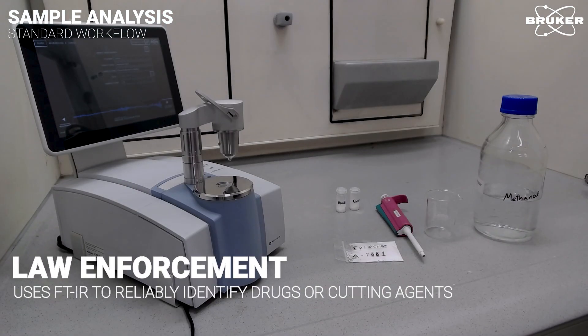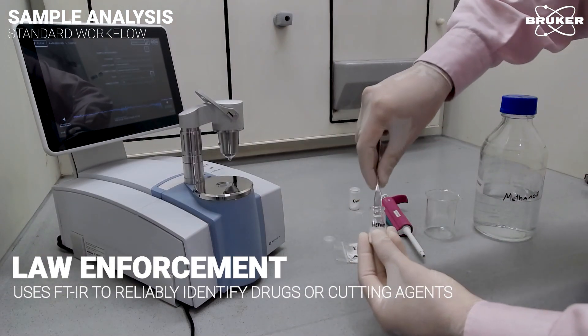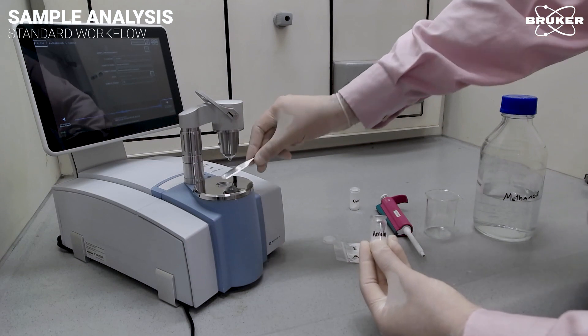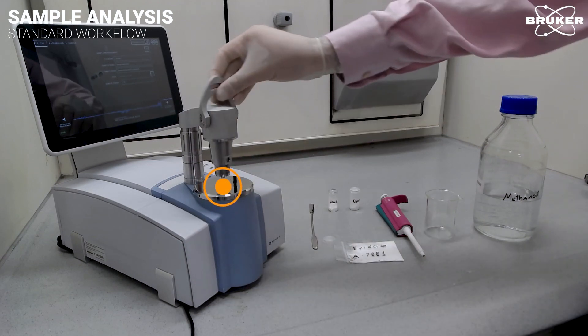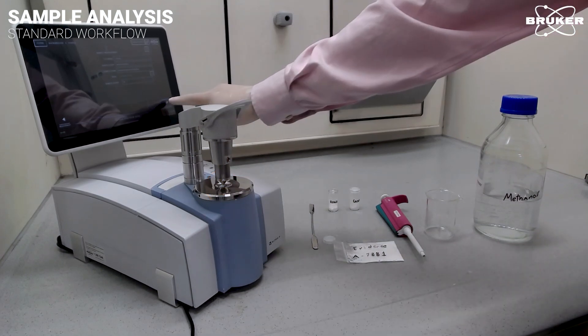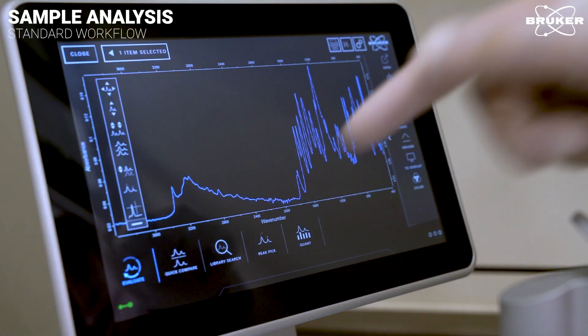Law enforcement is using infrared spectroscopy to reliably identify drugs as well as cutting or lacing agents. For such an analysis, the substance in question is simply placed on the ATR crystal of the instrument and analyzed. But since these substances often share chemical and physical properties, differentiating them can be challenging.